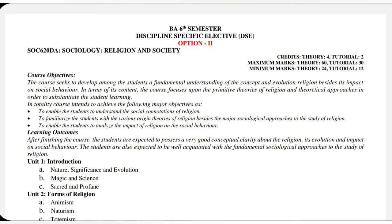Course objectives: the course seeks to develop among the students a fundamental understanding of the concept and evolution of religion, besides its impact on social behavior. The course focuses upon the primitive theories of religion and the theoretical approaches. The major objectives are: to enable the students to understand the social connotations of religion, to familiarize the students with the various origin theories of religion and the major sociological approaches to the study of religion, and to enable the students to analyze the impact of religion on social behavior.